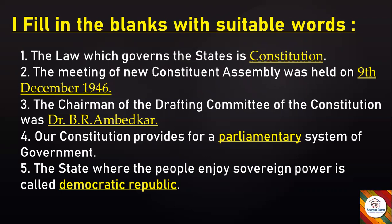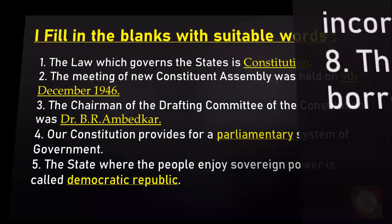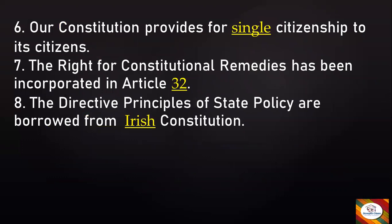The state where the people enjoy sovereign power is called — answer: Democratic Republic. Our Constitution provides for — citizenship to its citizens — answer: Single. The Right to Constitutional Remedies has been incorporated in Article — answer: 32. The Directive Principles of State Policy are borrowed from the — Constitution — answer: Irish Constitution. With this we finish the first main.